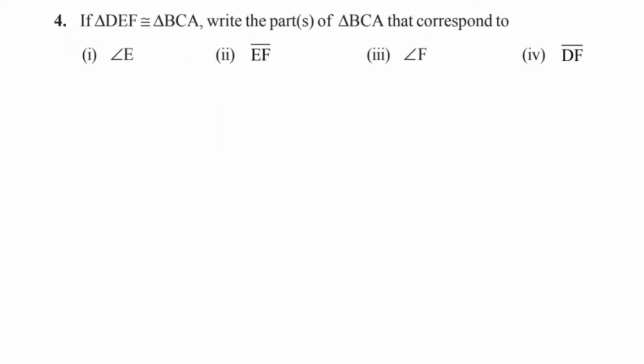The fourth question: if triangle DEF is congruent to triangle BCA, write the parts of triangle BCA that correspond to angle E, line segment EF, angle F, and line segment DF. Applying the same technique: angle E corresponds to angle C. Line segment EF corresponds to line segment CA. Angle F corresponds to angle A.